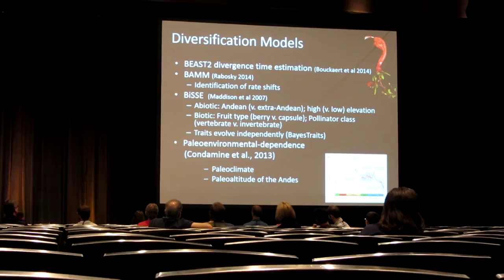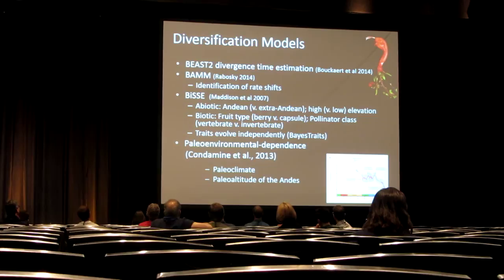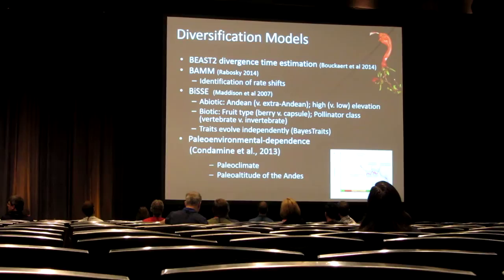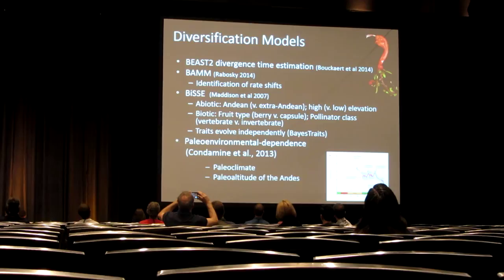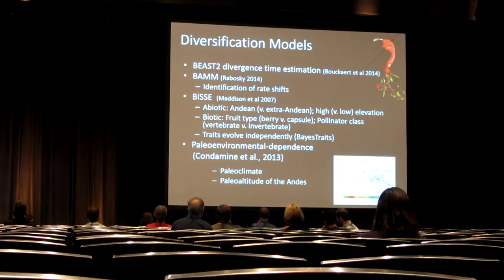Towards this end, I ran a series of diversification analyses on the dated phylogeny of this group. I did a BAM analysis to identify shifts in diversification rate along that phylogeny. I did a series of four BiSSE analyses to look at the effect of four traits on diversification rate. Two of those traits were abiotic — presence in the Andes versus not, and high versus low elevation. Two of those traits were biotic — pollinator type, whether pollinated by vertebrates or invertebrates, and fruit type, whether lineages produce fleshy bird-dispersed berries or dry abiotically dispersed capsules.